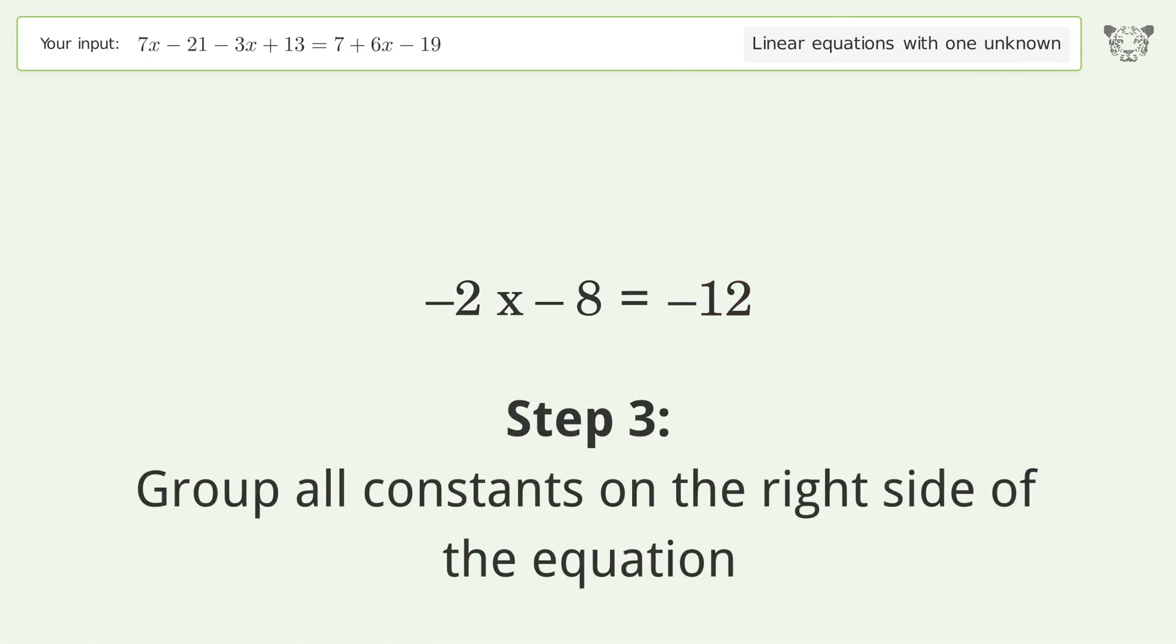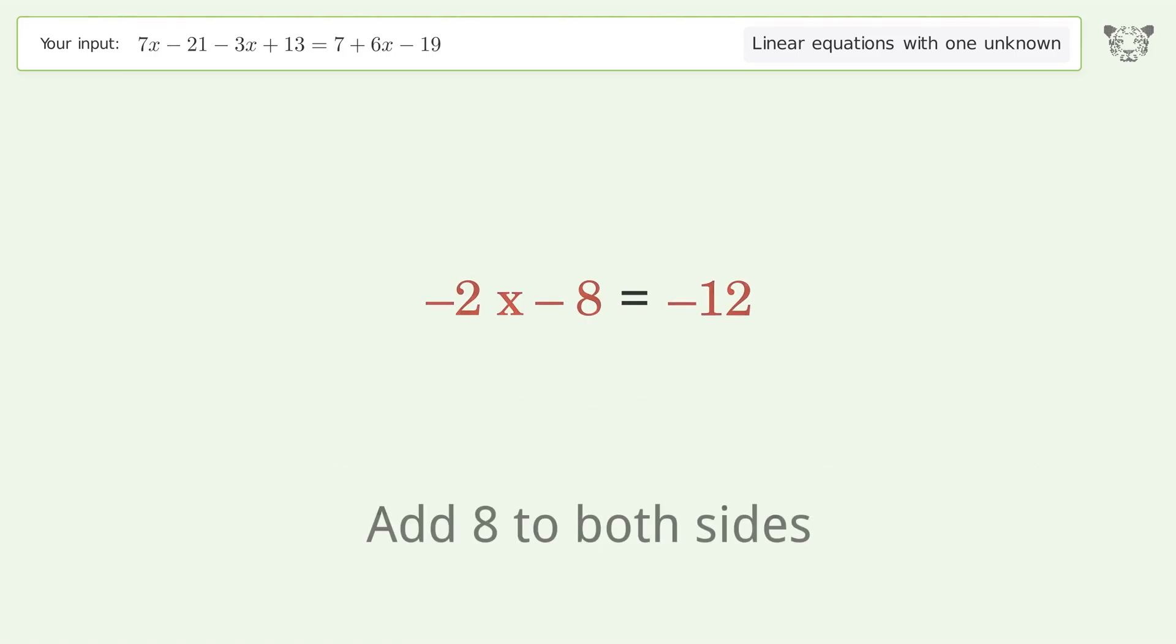Group all constants on the right side of the equation. Add 8 to both sides. Simplify the arithmetic.